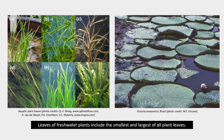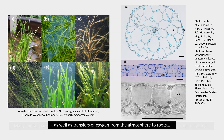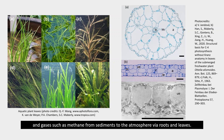Leaves of freshwater plants include the smallest and largest of all plant leaves. Many contain large volumes of airspaces that produce buoyancy and allow inorganic carbon recycling, as well as transfers of oxygen from the atmosphere to roots, and gases such as methane from sediments to the atmosphere via the roots and leaves.